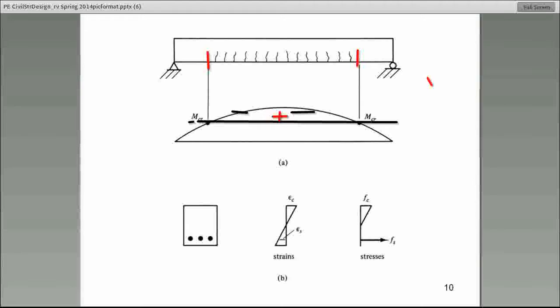You got it. It's a smiling face. So positive moments cause the beam to deflect like this. So what do we observe? The bottom is in tension. So the bottom is in tension. These cracks develop on the tension side. Very good.